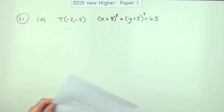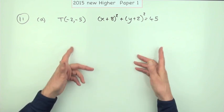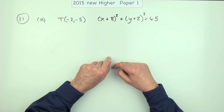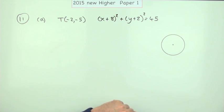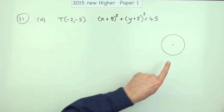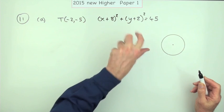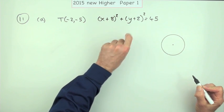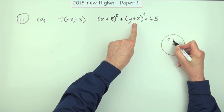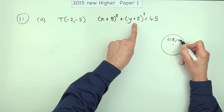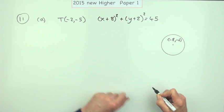That's a standard question. You don't need the diagram for this, but here's one. There's the circle. You know the centre would be the opposite of these values: negative 8, negative 2. So the centre is at negative 8, negative 2.